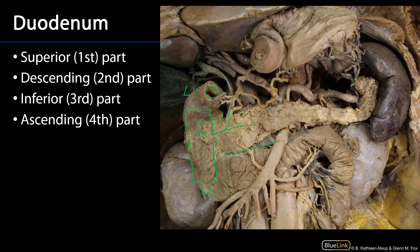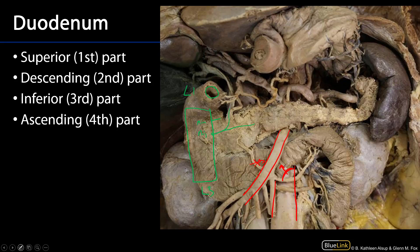The third part of the duodenum — the inferior part — also possesses circular folds and is secondarily retroperitoneal. It moves across at approximately the L3 level and is sandwiched between the SMA and the abdominal aorta. If there's any sort of abdominal aortic aneurysm, this can impinge on the duodenum. That condition is known as superior mesenteric artery syndrome, which can preclude the movement of materials through the small intestine.